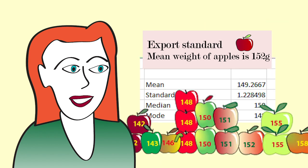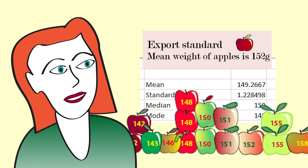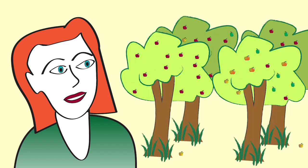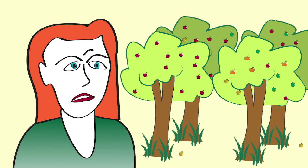She can see that the mean weight of the apples in her sample is about 149 grams. Could that just be by chance that the apples in the sample are mostly lighter than the ones in the whole orchard? Or is there evidence that the mean weight of the apples in her orchard is less than 152 grams?